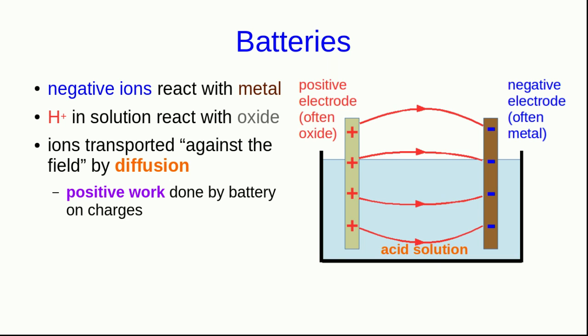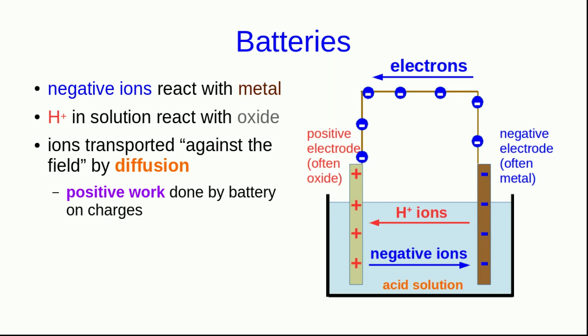However, if we connect the electrodes together with a conducting wire, electrons will flow from the negative electrode to the positive electrode. The chemical reactions will start up again, and the transport of ions by diffusion will continue. So we get a continuous flow of charge around the circuit.